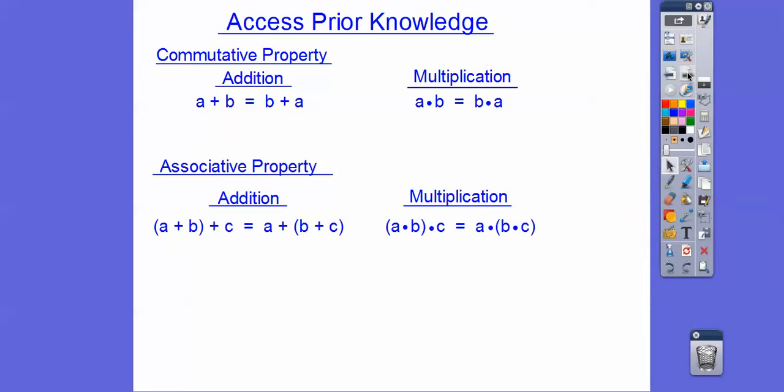So we're going to talk about the commutative property and the associative property. The commutative property—when I drive to work, you guys, I am commuting to work. I'm driving my truck to work. And so what these guys are doing is commuting around the addition sign. The a plus b is b plus a. It's called the commutative property.